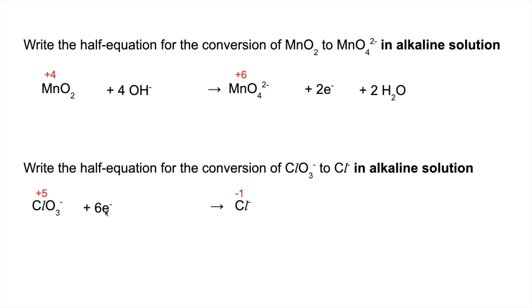That's given us 7 minus charge on the left, 1 minus on the right. So we need 6 hydroxide ions on this side. And then obviously to balance the remaining atoms, 3 waters.